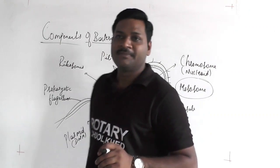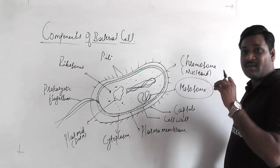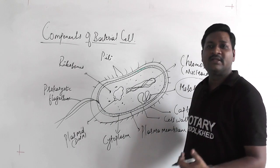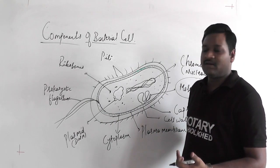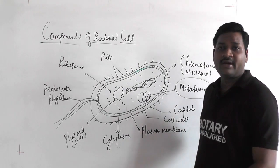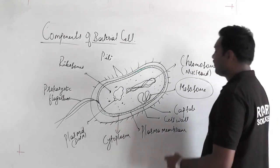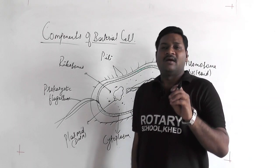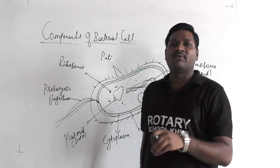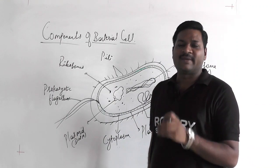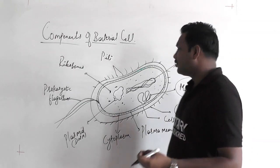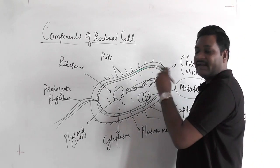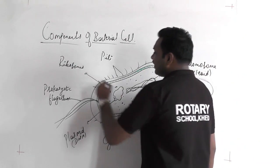In the prokaryotic cell, most cell organs are absent. So the question is: how do these organisms produce energy for their survival? Mesosome acts as the mitochondria of the bacterial cell. Apart from that, they have the chromosome called the nucleoid. The nucleoid is not called a nucleus because it is not bounded by a membrane — it freely suspends in the cytoplasm. It represents a very primitive type of cell.